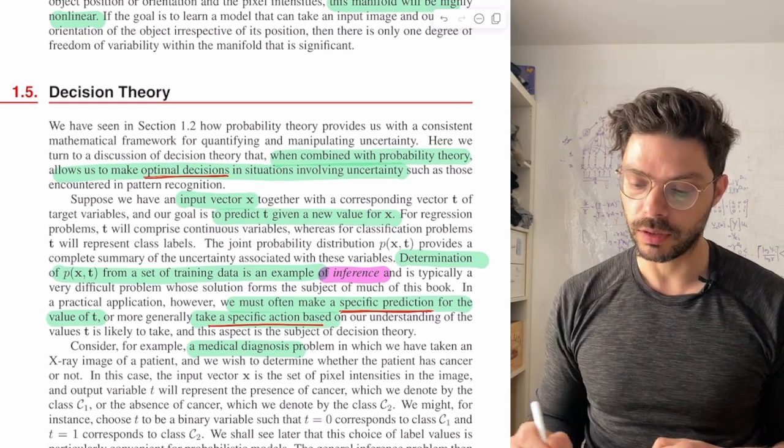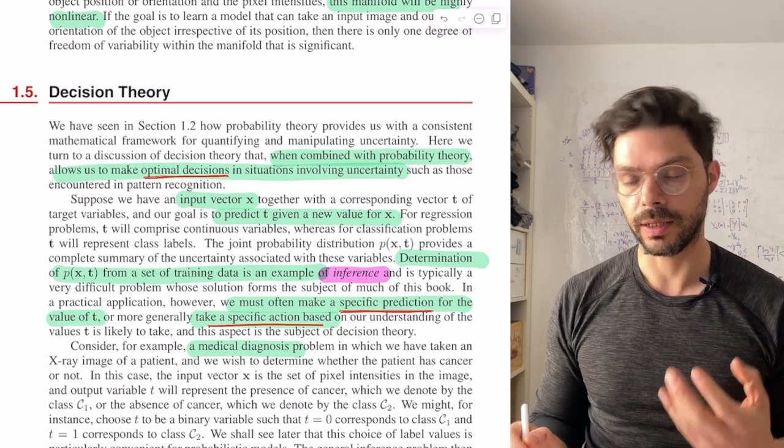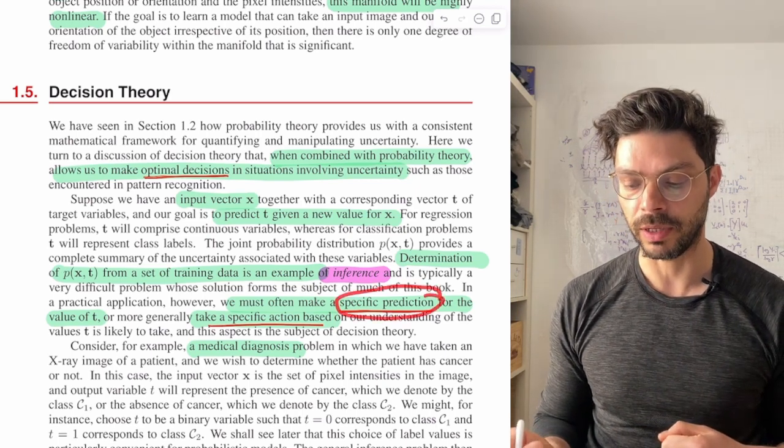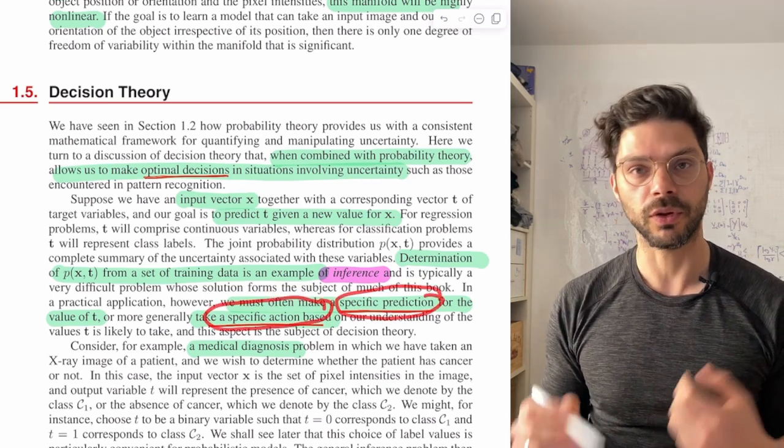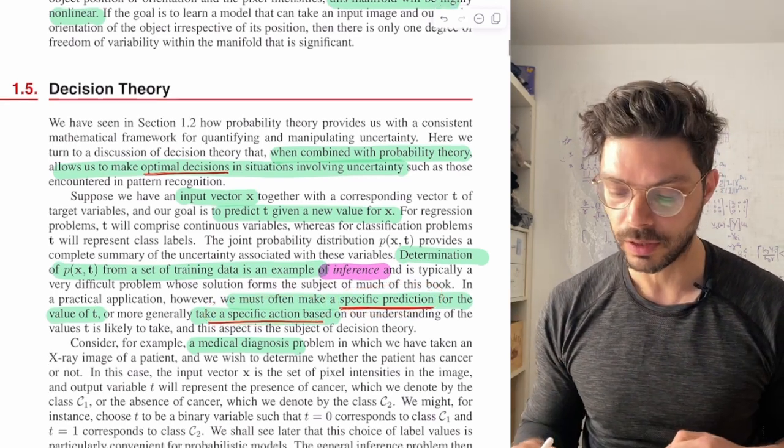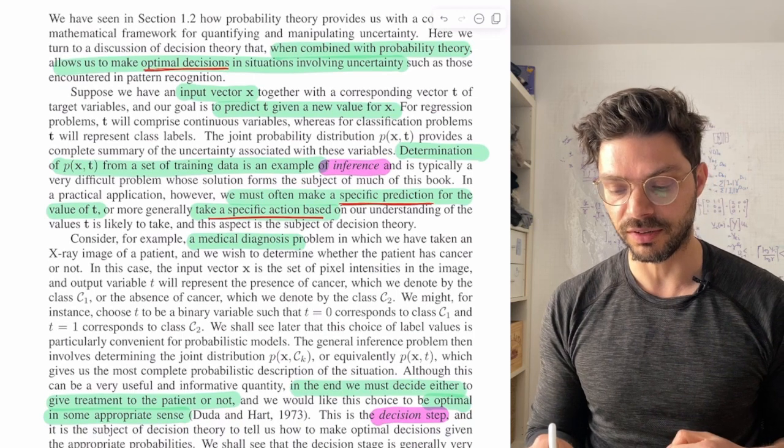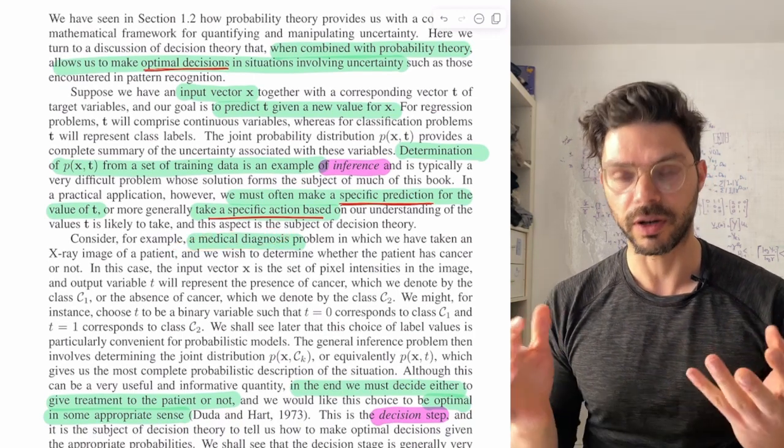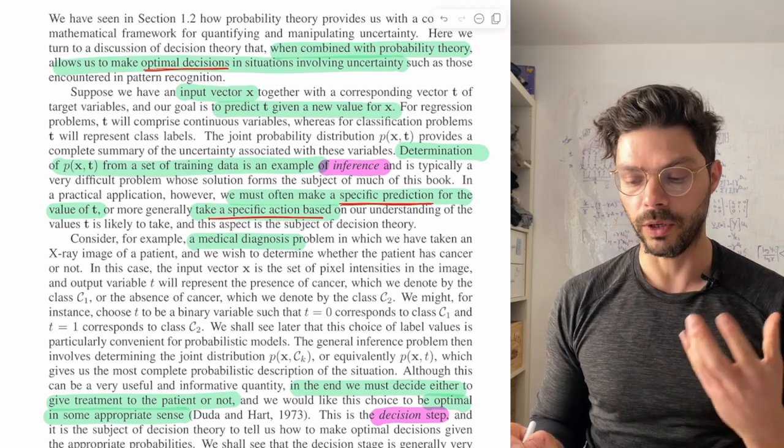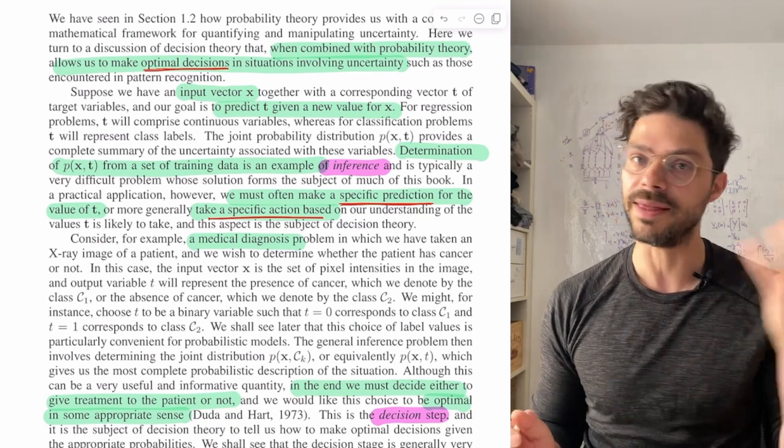But as I mentioned, we frequently can't stop there. So it's not just enough to quantify the uncertainty, we have to make a specific prediction or take an action. So the question is how we can do that. And a classical example of this is in medical diagnosis. So this is something that comes up all the time, very important problem, where we need to quantify uncertainty and then make a decision.